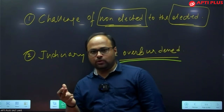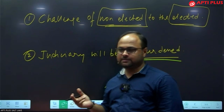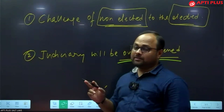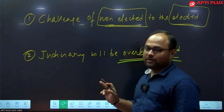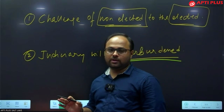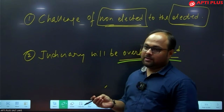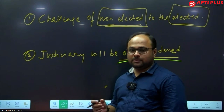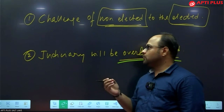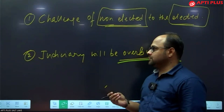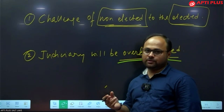Articles 14, 19, and 21 together have been called the Golden Triangle. We will study why in later classes through respective judgments. Article 21 is the most evolved article in the Constitution — the concept of right to life has been expanded by the Supreme Court in numerous cases, giving it a wider connotation. This was a brief discussion on the difference between procedure established by law and due process of law, and a short discussion on Article 21. Thank you.